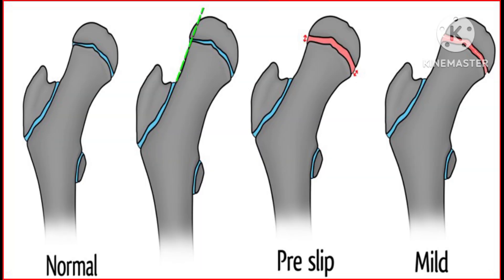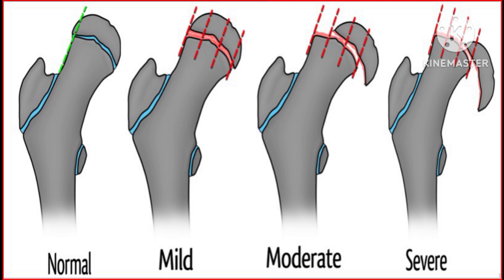Here is a series of illustrations depicting slipped capital femoral epiphysis ranging from normal to severe. The green line on the normal image represents the line of Klein drawn on the superior edge of the femoral neck, intersecting the lateral aspect of the superior femoral epiphysis. Mild: lateral edge of the epiphysis is within the lateral third of the metaphysis. Moderate: lateral edge between the lateral third and the halfway point of the metaphysis. Severe: medial third, over the halfway point of the metaphysis.